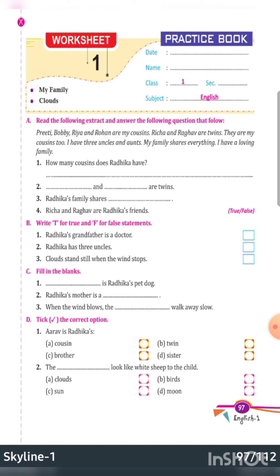Read the following extract and answer the questions that follow. Let us read: Preeti, Bobby, Rhea and Rohan are my cousins. Richa and Raghav are twins. Twins are kids who share their birthday and are real brothers and sisters — they are born together. They are my cousins too. I have three uncles and aunts. My family shares everything. I have a loving family. Very simple sentences.